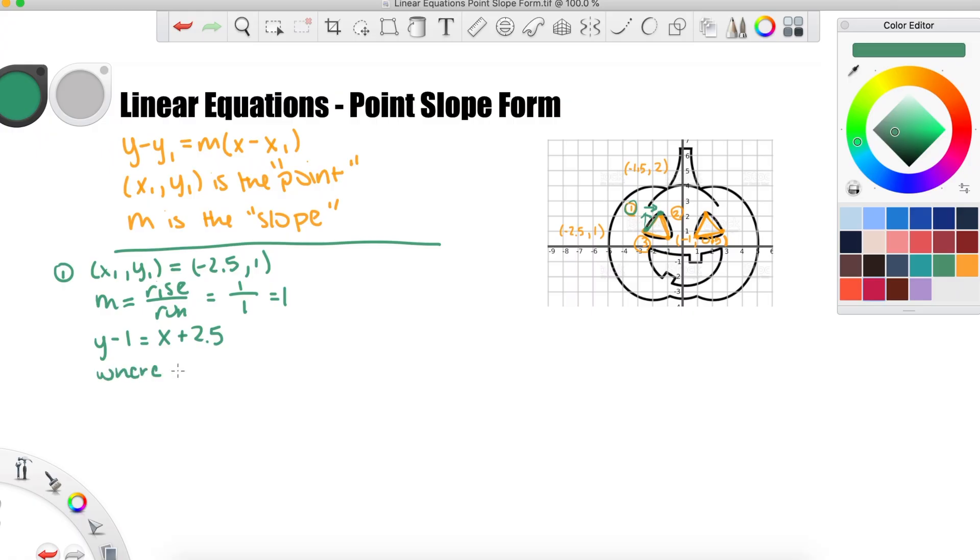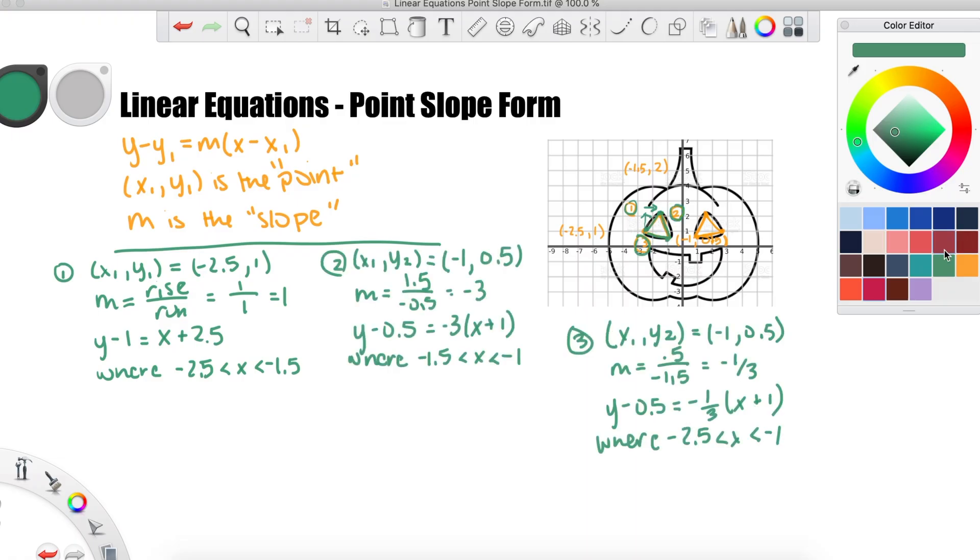Again, we have to restrict the domain because we're not using the full line, we're only using the stuff between negative 2.5 and negative 1.5. And we'll do the same for the other two lines to make up the full left eye.